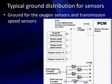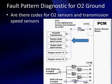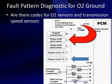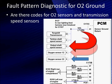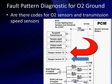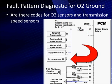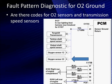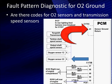Here's a typical ground distribution for pin 41. Ground for the oxygen sensors and the transmission speed sensors are all on one. Do you have codes for high voltage readings on turbine shaft speed sensor, output shaft speed sensor, oxygen sensor 1, oxygen sensor 2, or 1-1, 1-2, and 2-2? If you do, you may be looking at a problem on pin 41. This works with the same technology the light bulbs did.